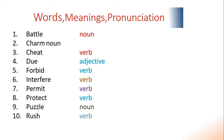In this slide we're going to explain the 10 keywords, their meanings and pronunciations. The first word is 'battle.' Repeat: battle. The word battle is a noun according to grammar; it can be a verb as well. The next word is 'charm.'